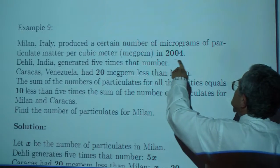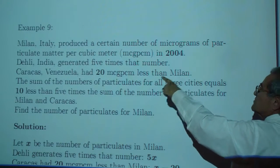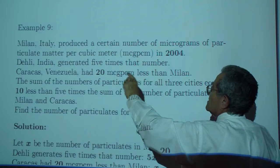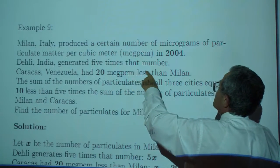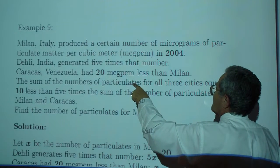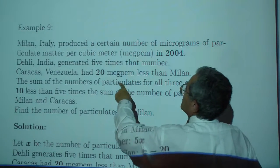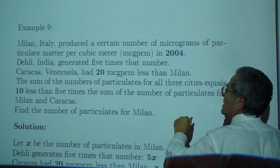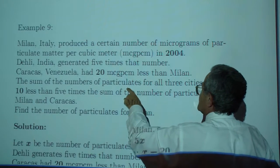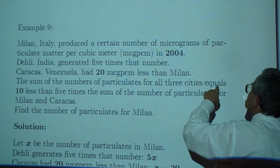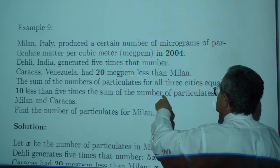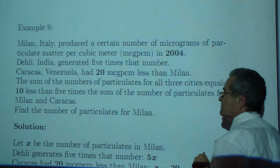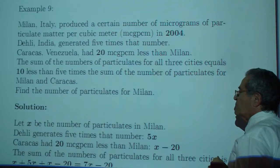Milan, Italy, produced a certain number of micrograms, a particulate matter per cubic meter, in 2004. Delhi, India, generated 5 times that number. Caracas, Venezuela had 20 MCG per cubic meter less than Milan. The sum of the numbers of particulates of all three cities equals 10 less than 5 times the sum of the number of particulates for Milan and Caracas. Find the number of particulates for Milan.